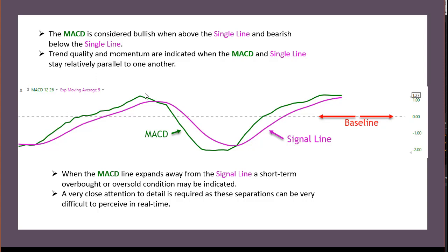We want to see those moving averages moving kind of in parallel with each other. When we see them drop or diverge from each other — when we get a little divergence between the 9 and MACD and then a selloff and separation — that can actually give you an indication of an oversold condition. It's moved too far and we can expect maybe a pop back up.